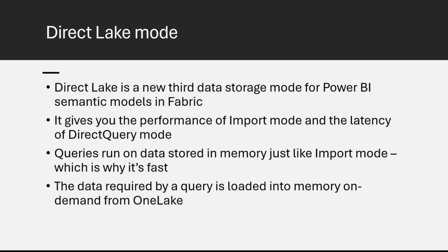There's another thing called fallback. You can build a semantic model and say you want it to be in Direct Lake mode, but you might be using features that are not supported in Direct Lake mode. In that case, the semantic model will look at what you've done and say it can't actually use Direct Lake mode. By default, it'll fall those tables back to direct query mode, because OneLake, lakehouse, and warehouse all have a SQL endpoint—you can run SQL queries against these tables. We probably don't want to fall back to direct query mode because that's when performance is going to get worse—though it's never going to be as good as the in-memory VertiPaq engine you get with Direct Lake mode.